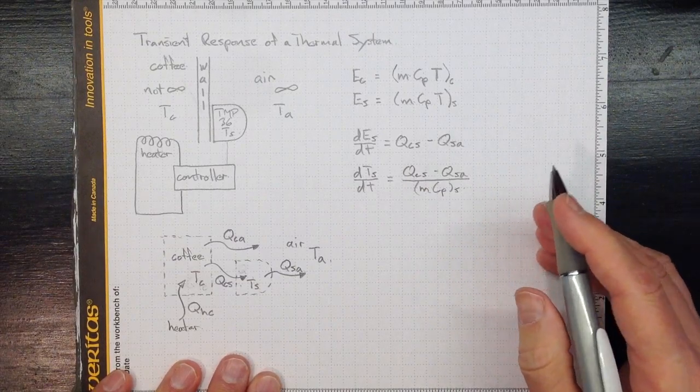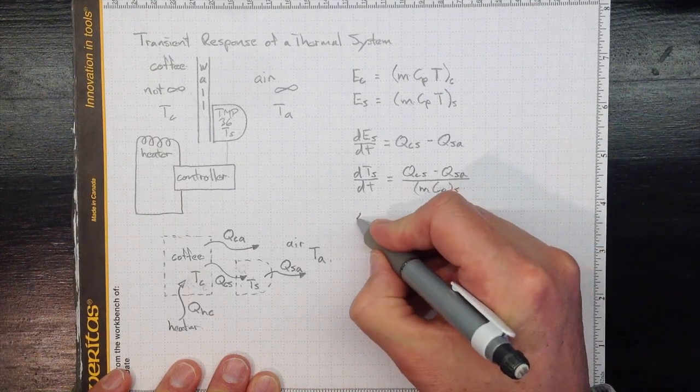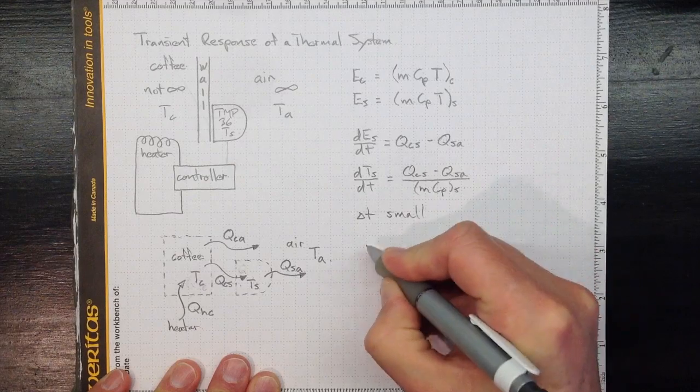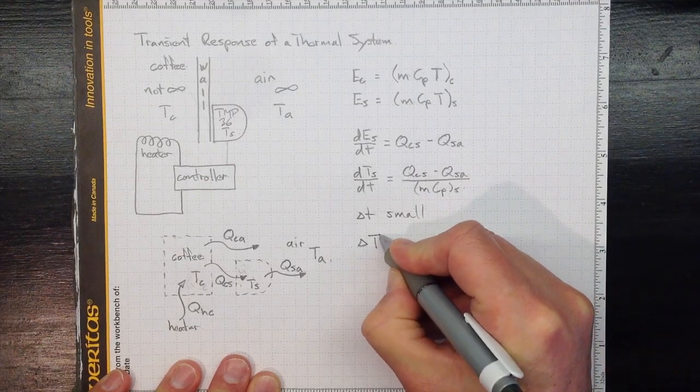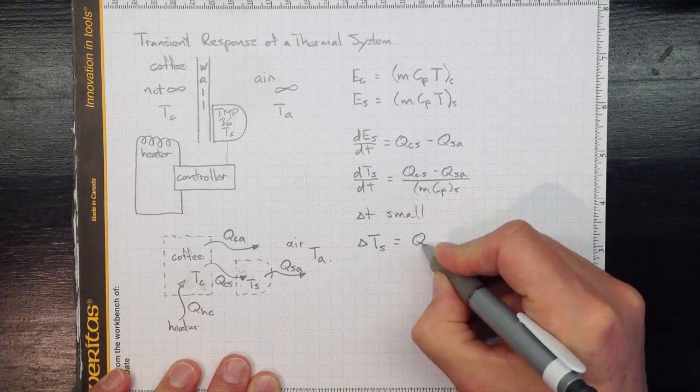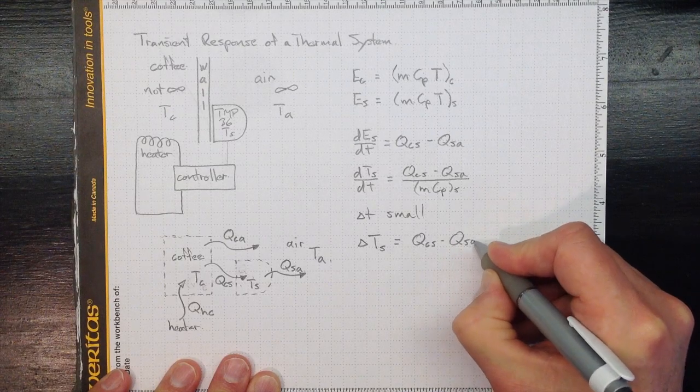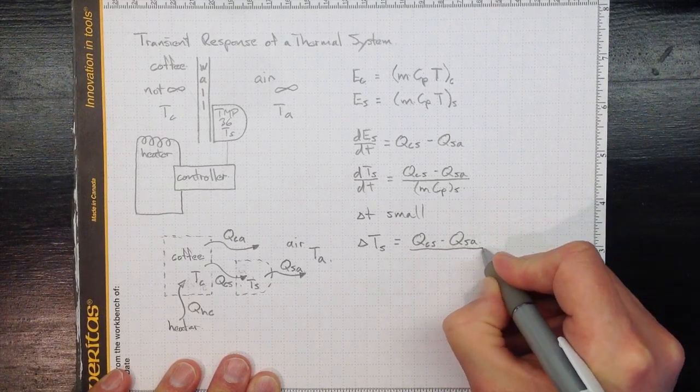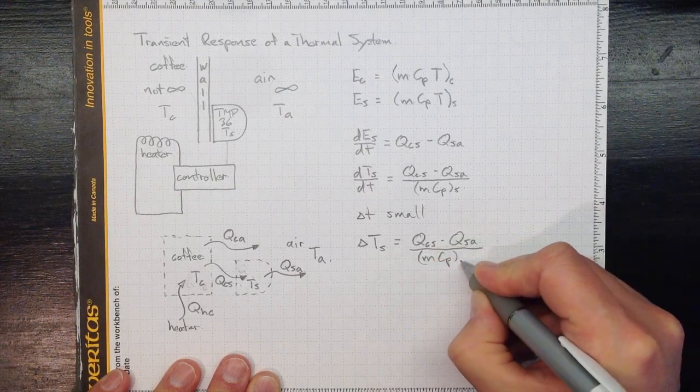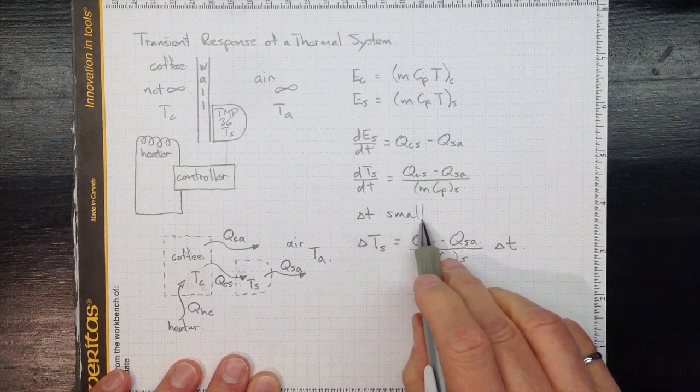Or if we take a really short time step, so delta T small, then we'll see an increase in temperature over that short time in the sensor equal to QCS minus QSA over mass and specific heat of the sensor times the short time over which we're working.